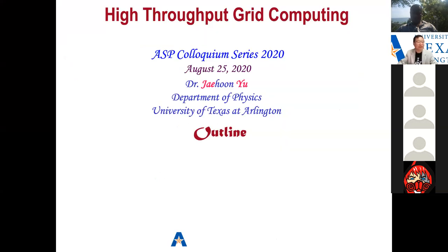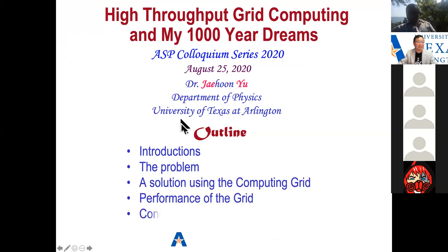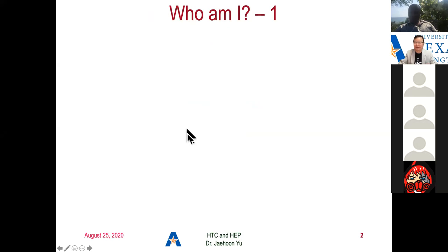I actually had my first practice class yesterday afternoon so I know how Zoom works. I have 130 students — this is first-year electromagnetism — and I always have a lot of students like that. That's why it has to be online and synchronous, and we'll see how it works out.